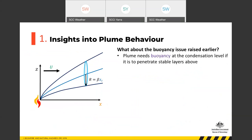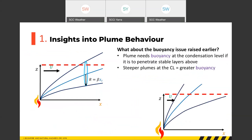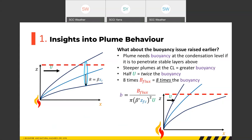The plume needs buoyancy at the condensation level to penetrate stable layers above. The steeper the plume at the condensation layer, the greater the buoyancy. Going back to the example where we doubled the plume height by halving the wind speed: that yields twice the buoyancy, because u is in the denominator of the buoyancy equation. But if we double the plume height by increasing the buoyancy flux eight-fold instead of reducing the wind, we get a plume that is eight times as buoyant.